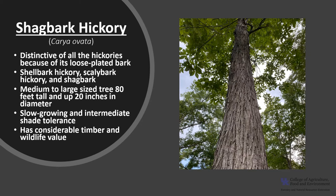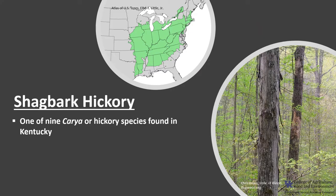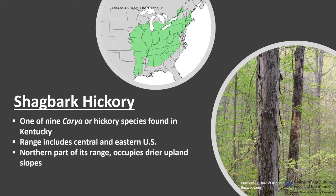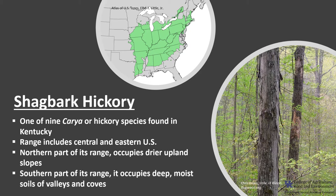Shagbark Hickory has considerable timber and wildlife value. It is one of the nine Carya or hickory species found in Kentucky and grows widely throughout the eastern and central United States. In the northern part of its range, Shagbark Hickory occupies drier upland slopes, and in the southern part of its range, it occupies deep moist soils of valleys and coves.